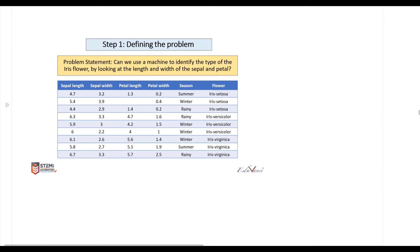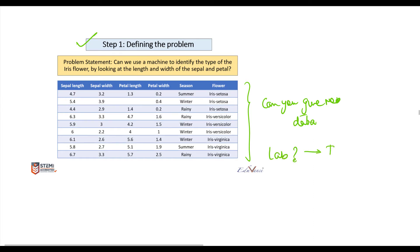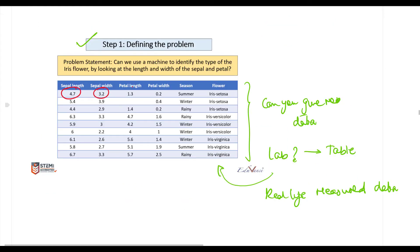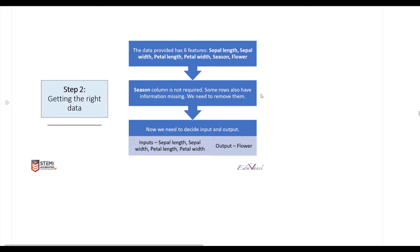The next question we ask is: do we have the right data? With step one done, we ask Jane if she can give us data. Jane goes back to her lab and provides a table with real-life measured data — scientists have looked at these flowers and measured the lengths and widths, and based on those parameters they classified the type of flower as setosa, versicolor, or virginica.